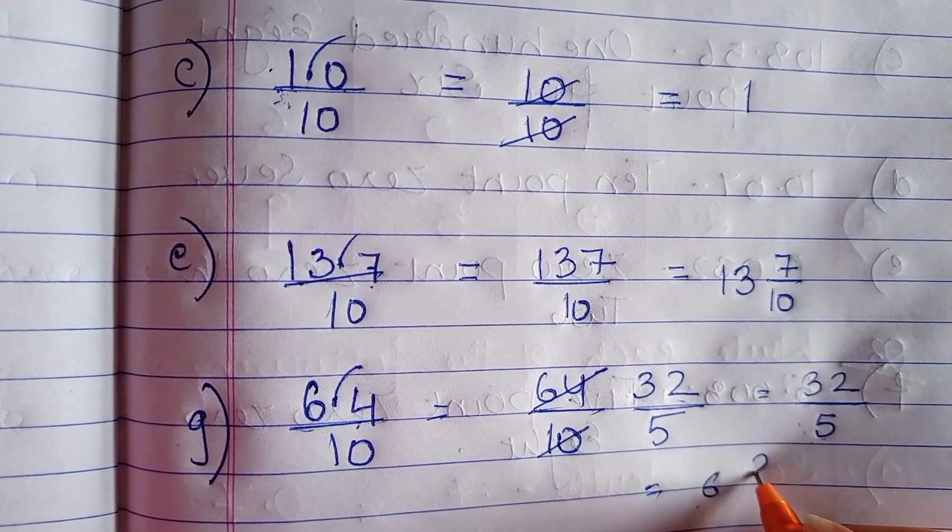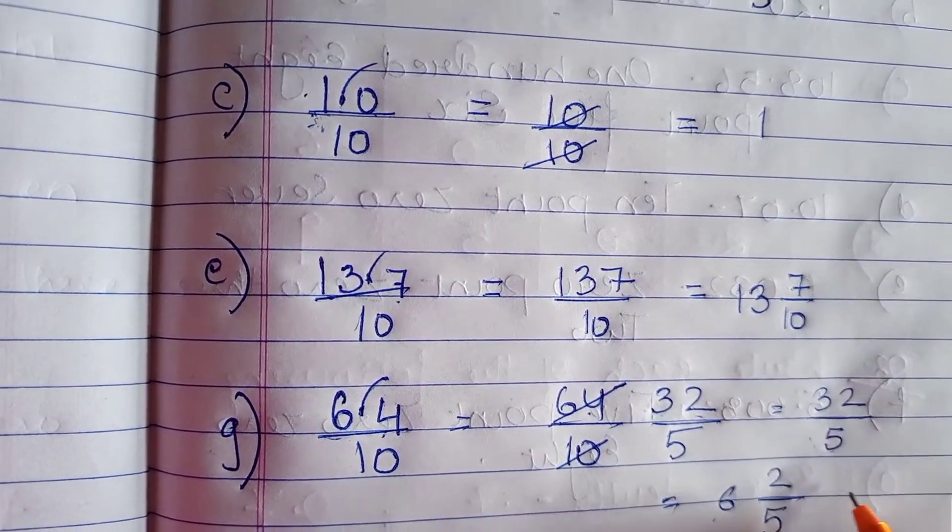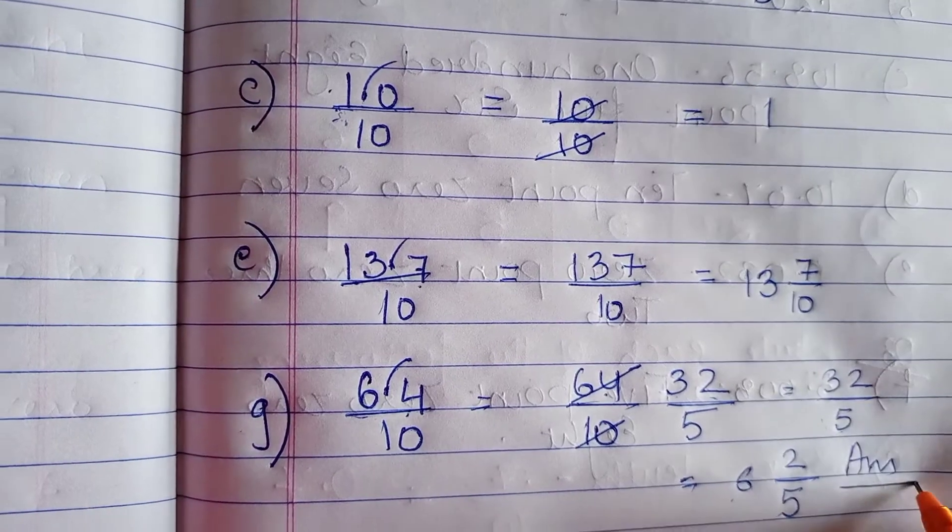30. 5 6s are 30. Remainder is 2. So this is your answer.